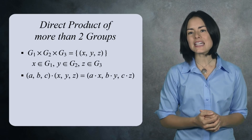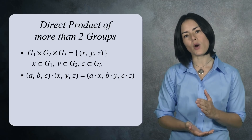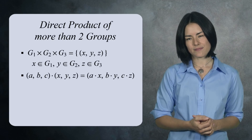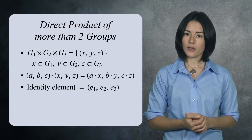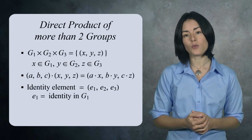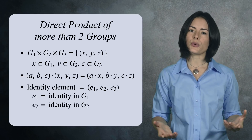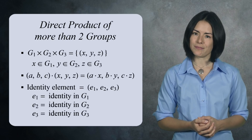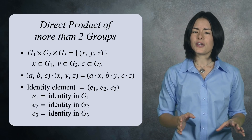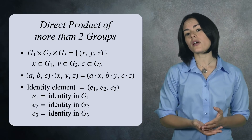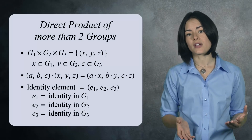The product of (A, B, C) and (X, Y, Z) is (AX, BY, CZ). The identity element is (E1, E2, E3), where E1 is the identity in G1, E2 is the identity in G2, and E3 is the identity in G3. There's no reason to stop with three groups — you can take the direct product of 4, 5, or any number of groups. You can even take the direct product of an infinite number of groups.